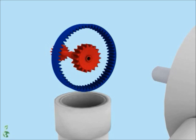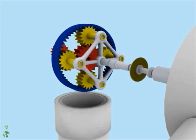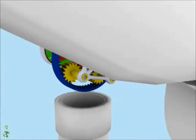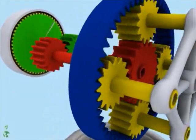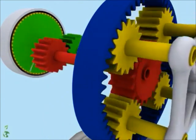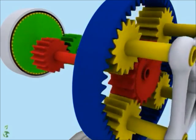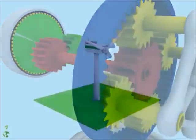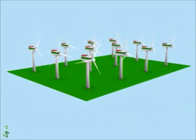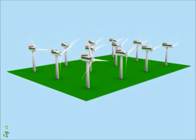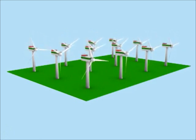The sun gear in the middle is meshed with four planet gears. An electromagnetic brake is applied when the wind velocity is too high. When the rotor spins, the planet gears drive the sun gear, which in turn drives the shaft of the generator to produce electric power.